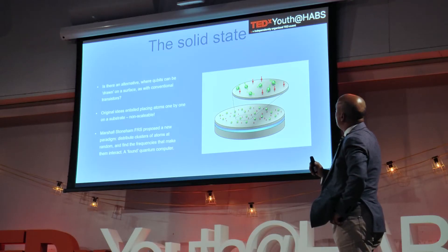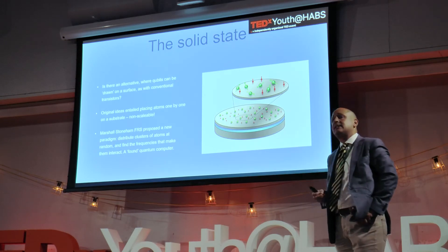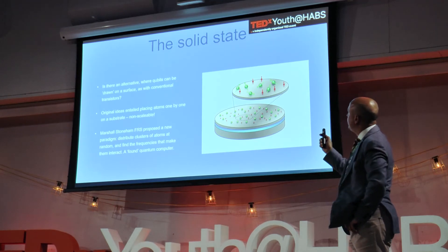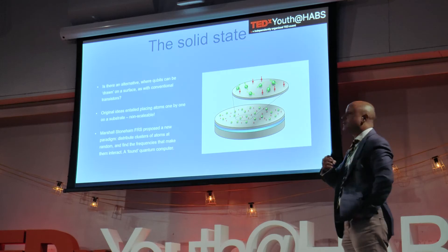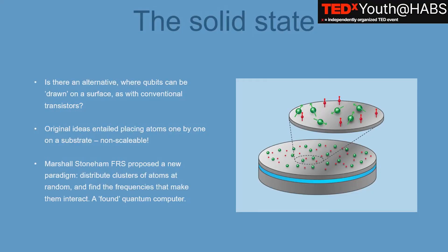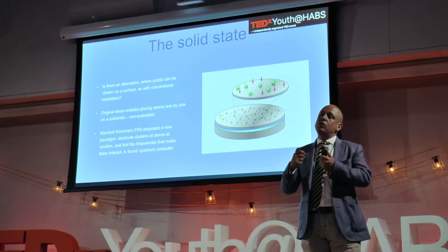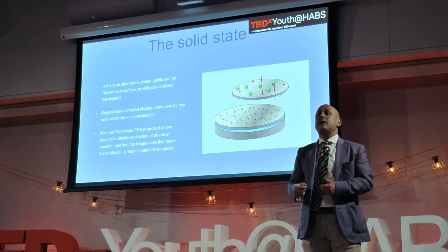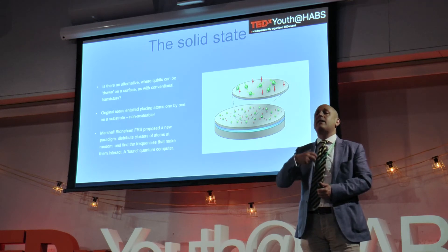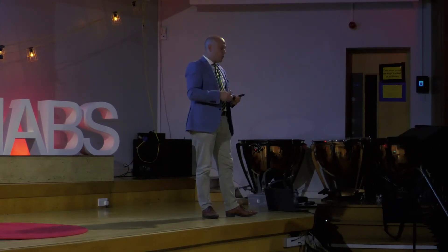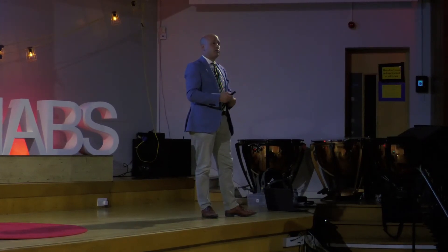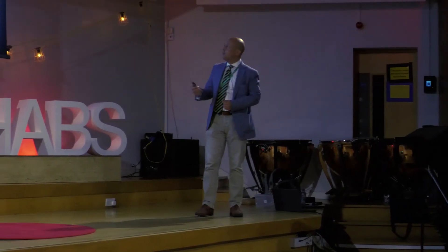So what can we do? Marsha Stoneman, Fellow of the Royal Society and head of my research group CMMP at UCL, proposed a new paradigm: to distribute clusters of atoms at random on a substrate. Create little clusters — they would represent some quantum states — and you would be able to do a kind of characterisation to discover how they interact. Then you would find a way of addressing the interactions that already existed. It was the idea of a sort of found quantum computer. It remains a work in progress.